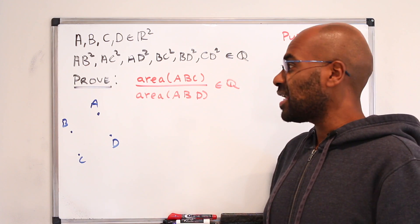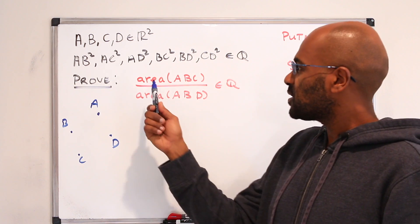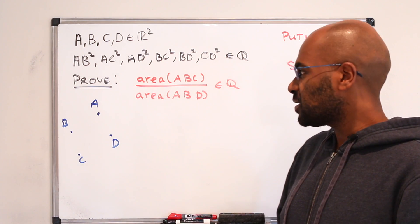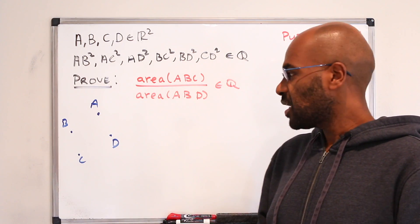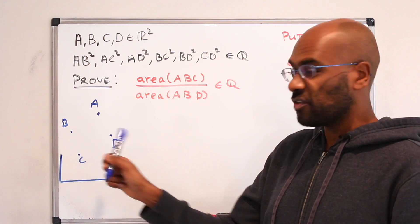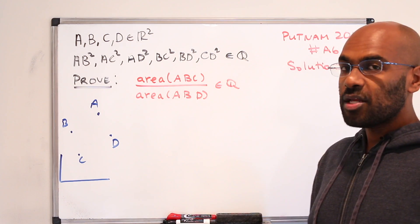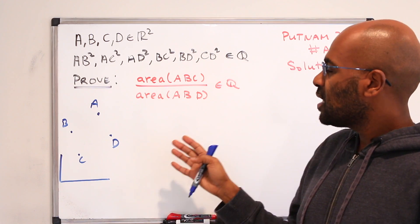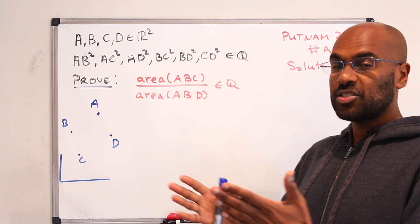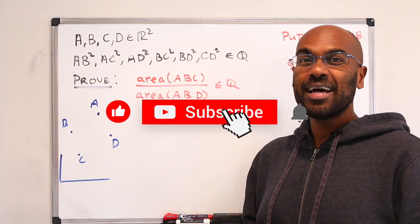The approach we're going to take today for this particular problem is a linear algebraic approach. The idea is to represent the area of these two triangles in terms of linear algebra expressions involving vectors between these particular points — representing each pair of points' lengths as lengths of actual vectors, then transferring this expression into something involving squares of these lengths.